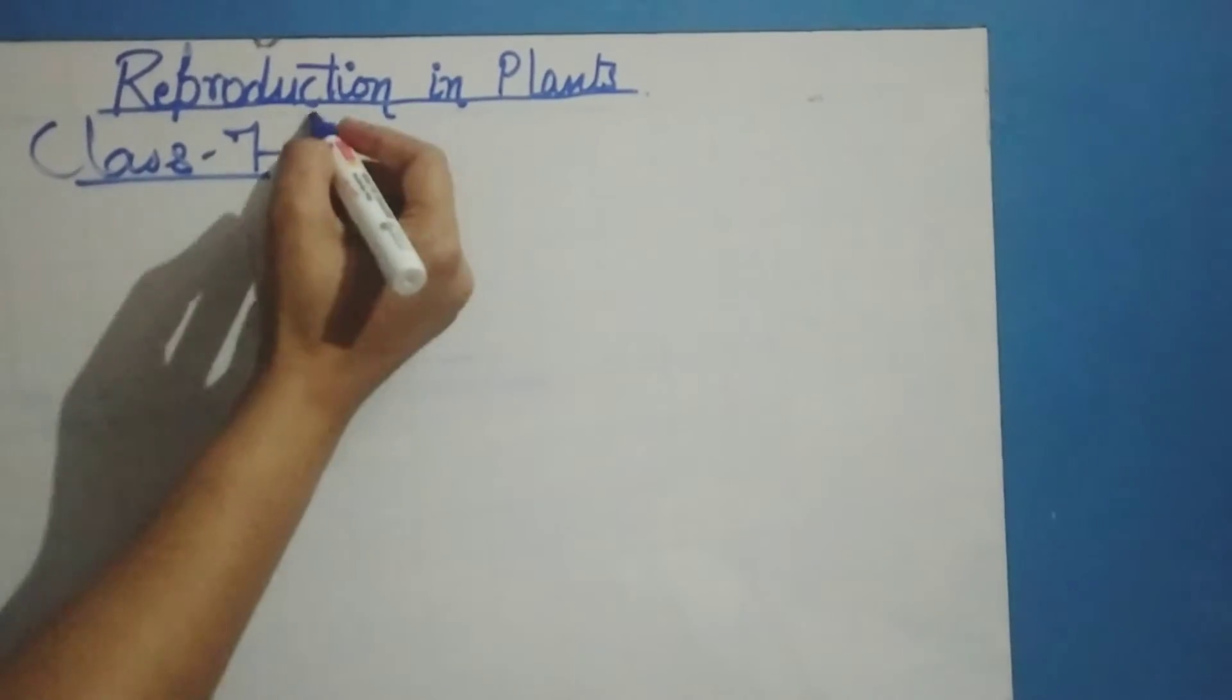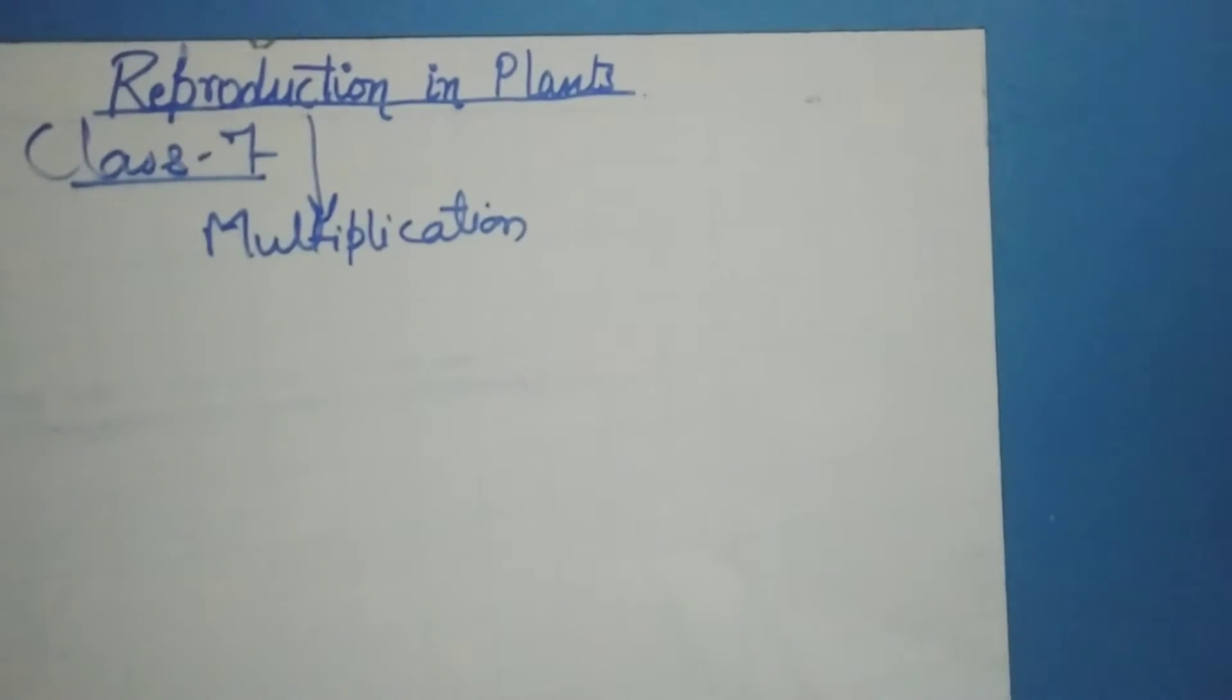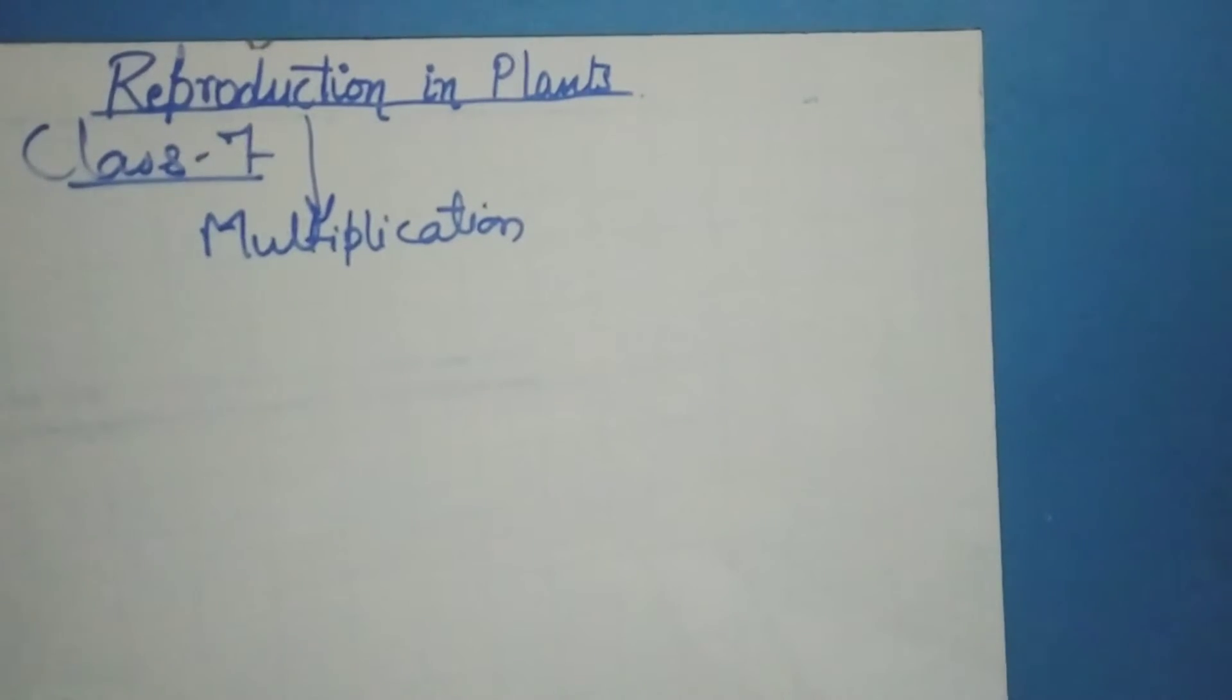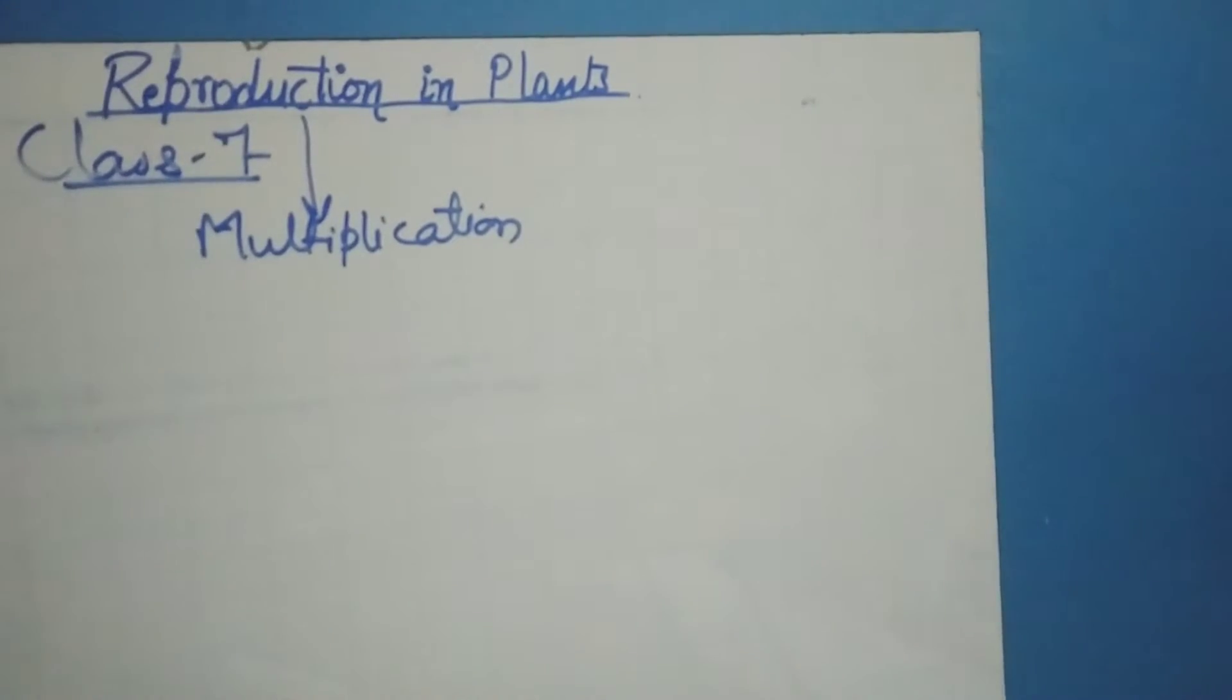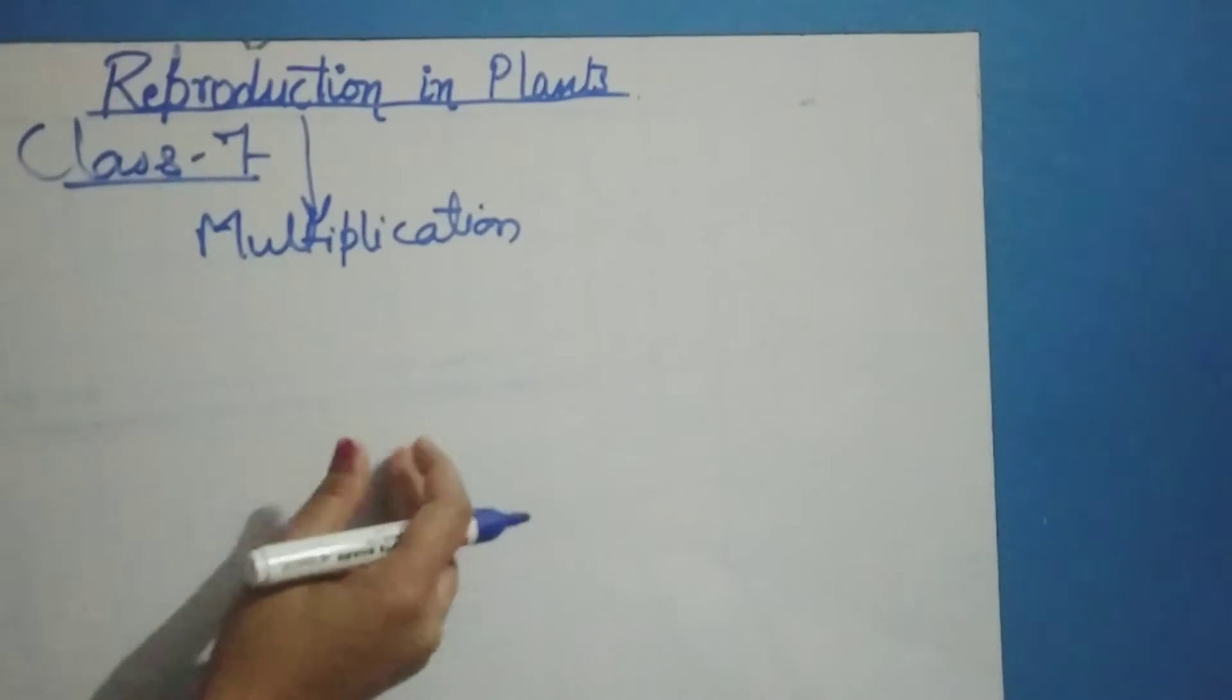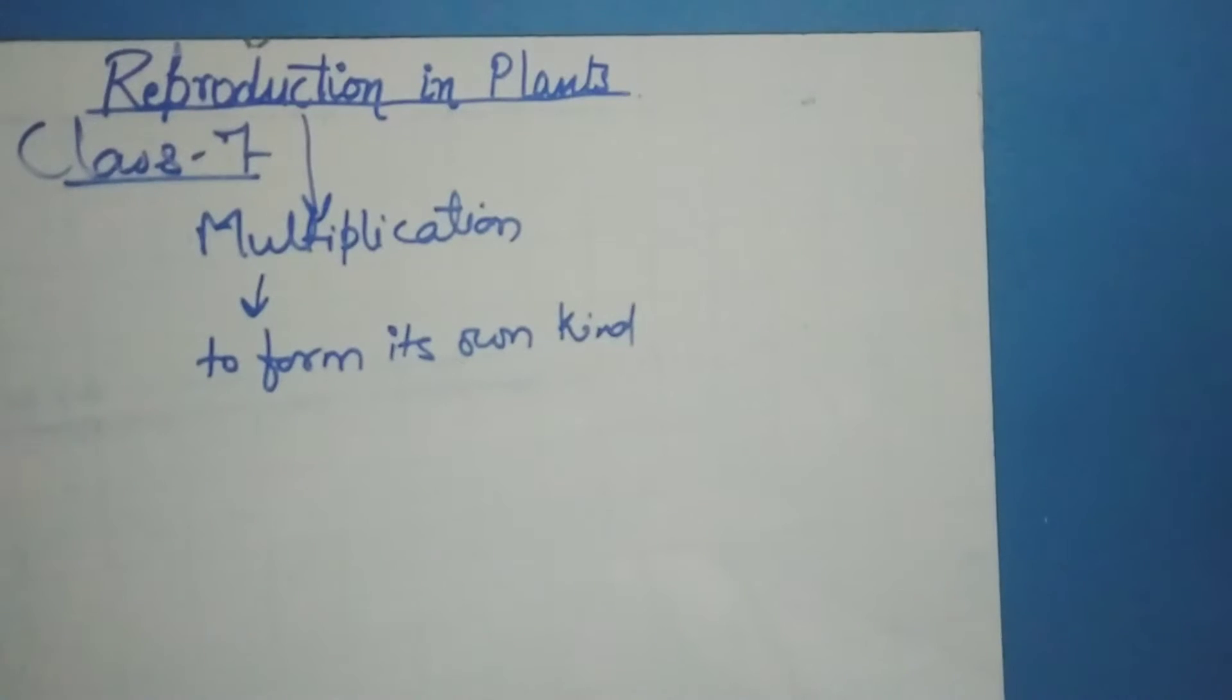Basically, reproduction is also called multiplication. What is reproduction? It is the production of new individuals. A new individual is formed when organisms multiply. That means an organism multiplies or reproduces to form its own kind.